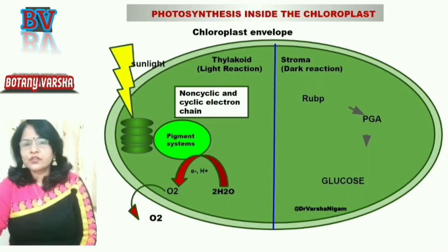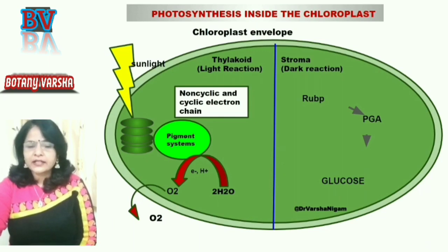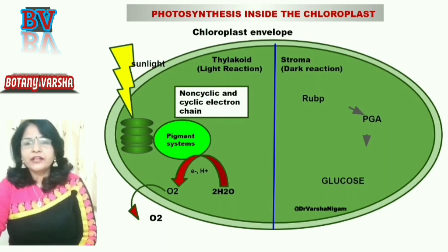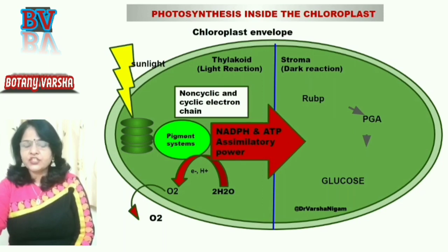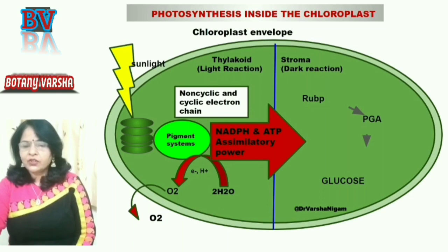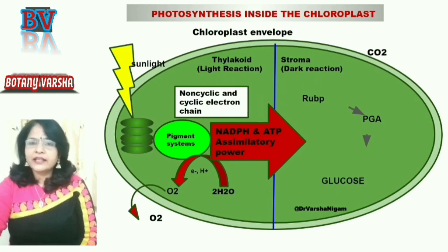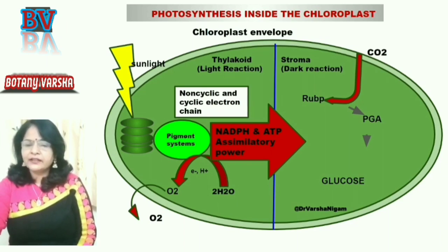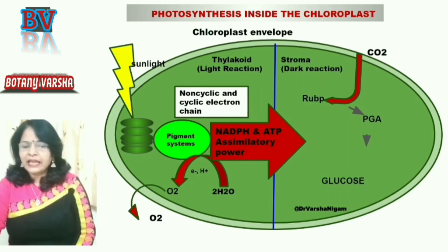Photophosphorylation is the production of ATP in the presence of sunlight, also called the electron transport chain. In this reaction, assimilatory power is produced in the form of NADPH and ATP. NADPH is the reduced form of nicotinamide adenine dinucleotide phosphate, and ATP is adenosine triphosphate. This assimilatory power is then transferred to the stroma where the dark reaction takes place, and CO2 is utilized in the stroma. The CO2 acceptor is RuBP, ribulose bisphosphate, and the Calvin cycle takes place.